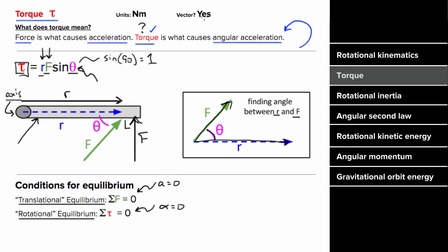Torque is a vector, so it has a direction. It's easiest to think of the direction as just being counterclockwise or clockwise, based on which way that force would cause the object to rotate. Since torque is R times F, the units are going to be meters times newtons, or newton-meters.